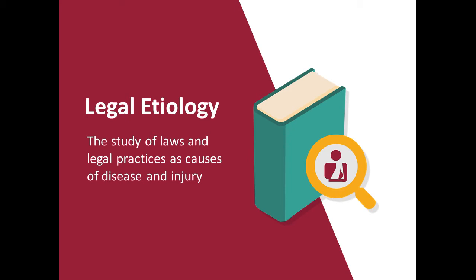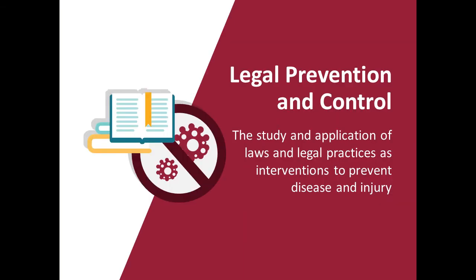These experiences may be quite different from the experiences of people with high income. A second element of legal epidemiology is legal prevention and control — the study of laws and legal practices as causes of disease and injury. Legal prevention and control explore how law shapes health systems and institutions and how it can be used as a tool of intervention. Let's think about how to study legal health interventions like seat belt laws and what effect those laws have on safety in car crashes. Legal prevention and control also include infrastructural law, which governs a health department's powers, duties, jurisdiction, and organization. Consider the example of comparing health outcomes in jurisdictions with and without rulemaking boards of health.